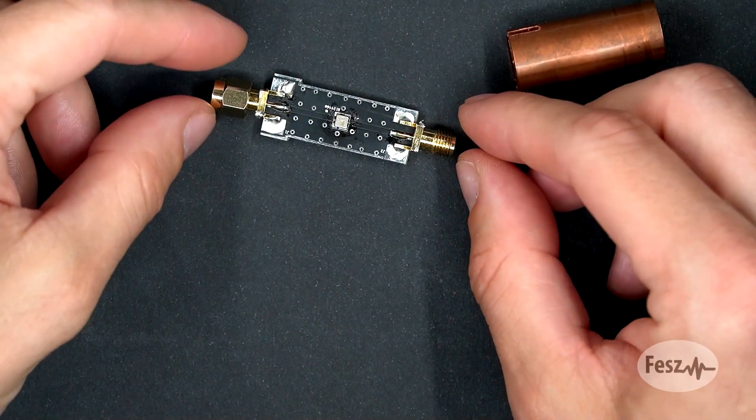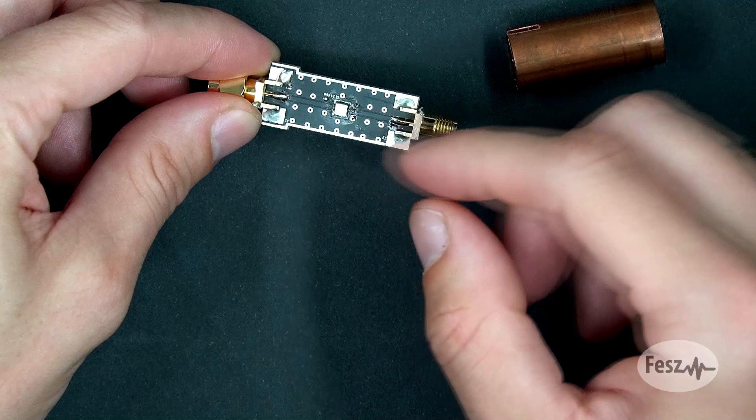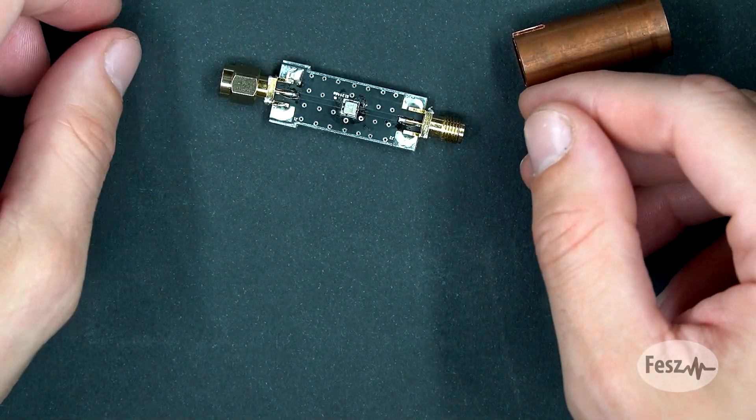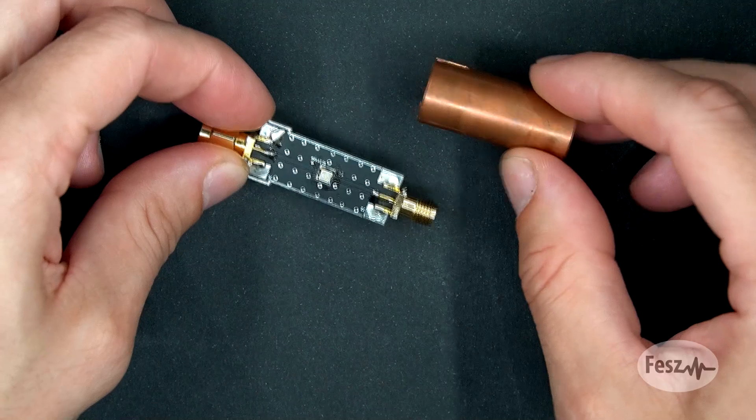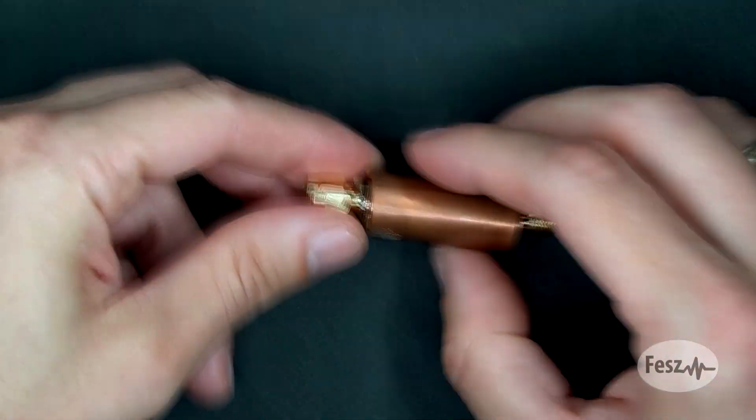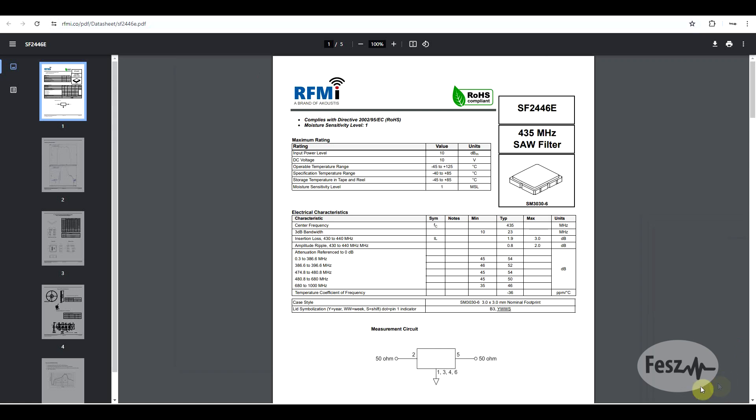One of the simplest filters I've ever built is a SAW filter for the 70cm ham band. It's a standalone filter component on a board with some connectors attached. I also made a small shield to house it and to isolate it from external noise, but not much else really to say about this thing.